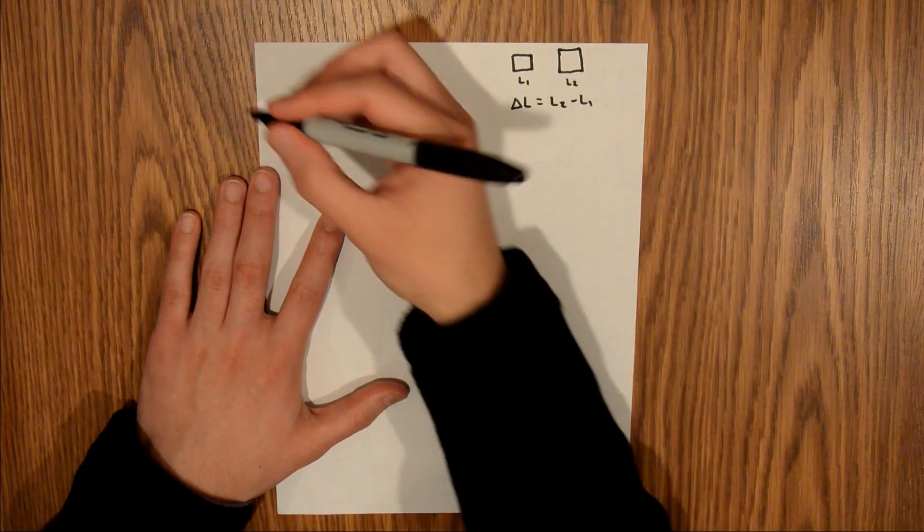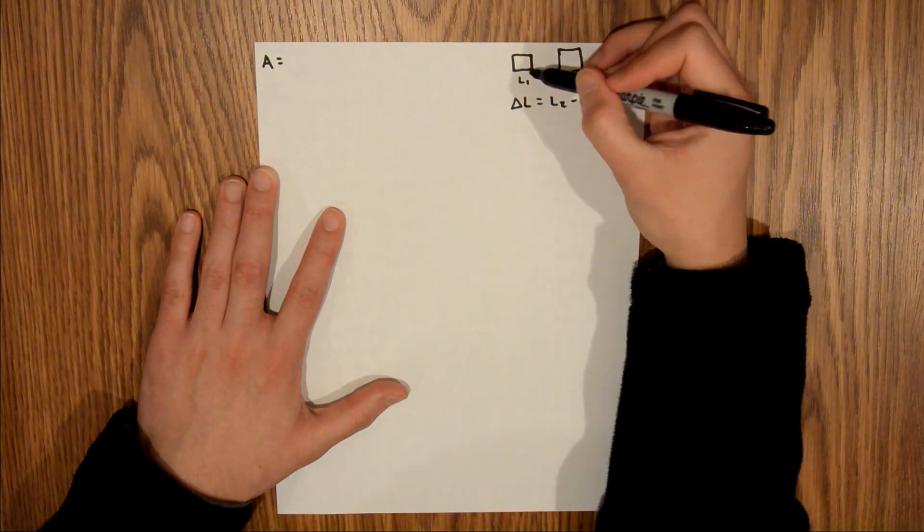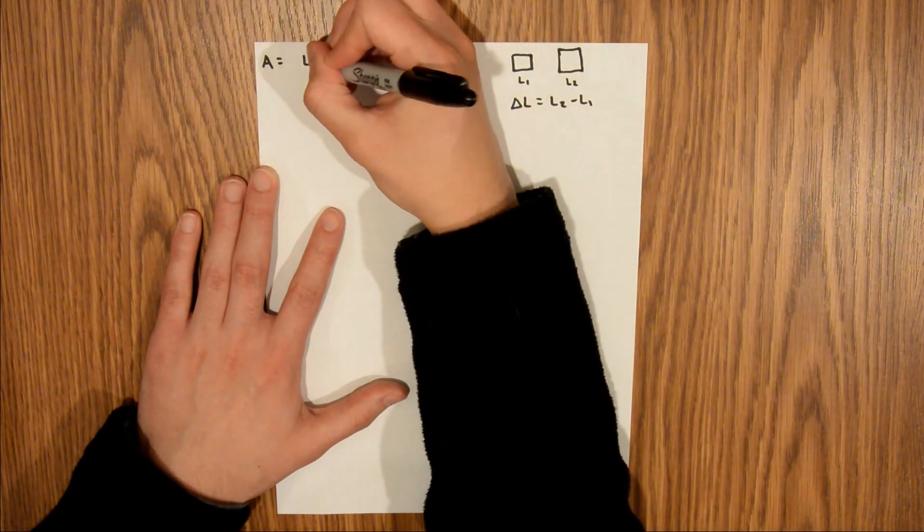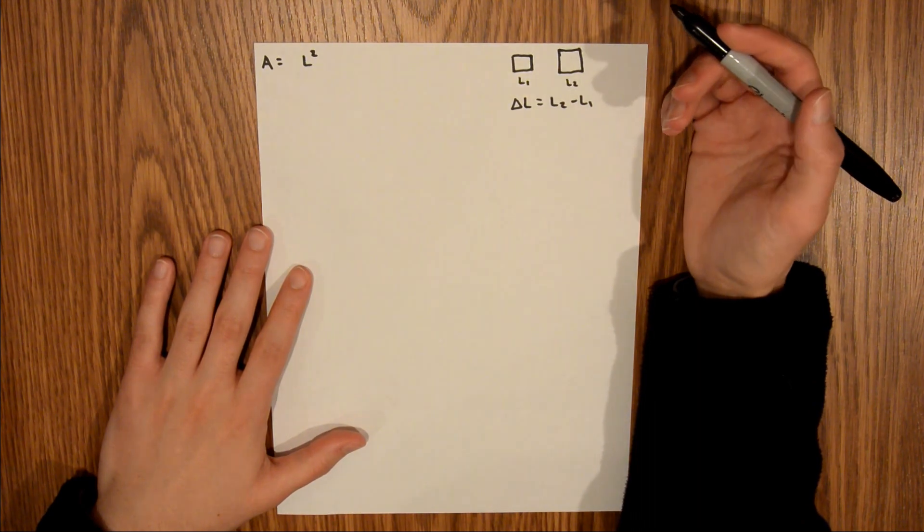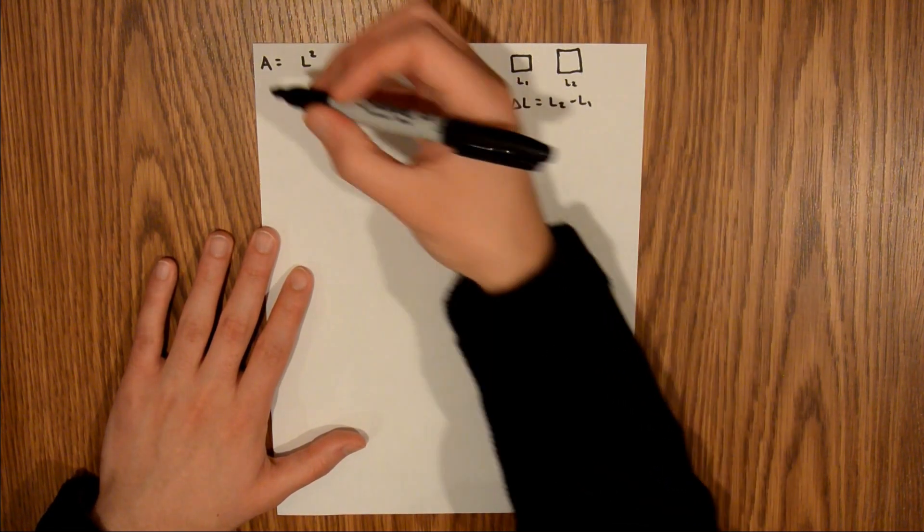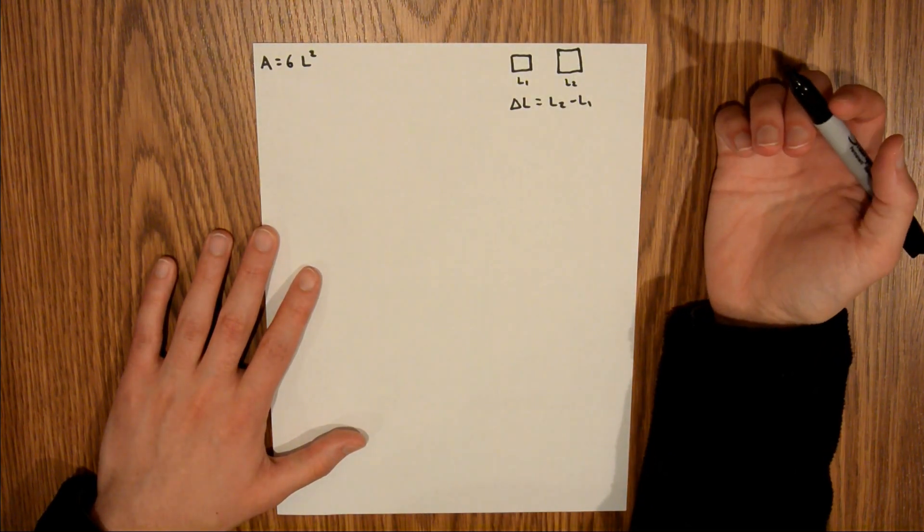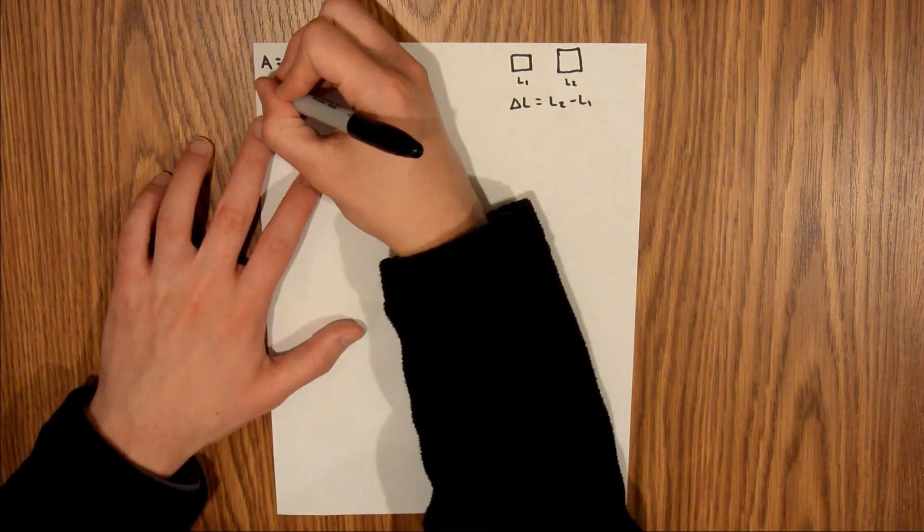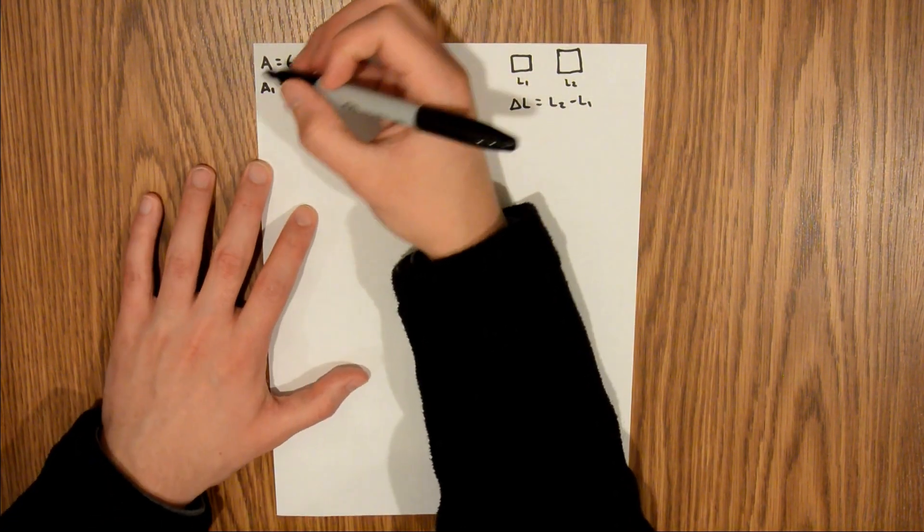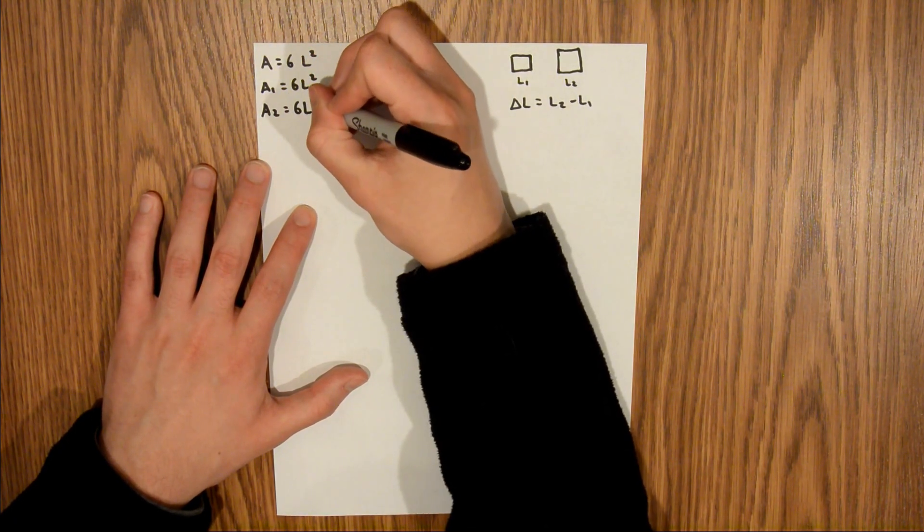And so we know that the area of this square is L squared, the length squared. So that's just L squared. But we're looking for the surface area increase of the entire cube. And a cube has six faces, so it's six times L squared. And so what we can do is write the area for both cases of this cube. And that's A1 is equal to six L1 squared. And A2 is going to be equal to six L2 squared.